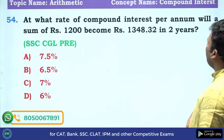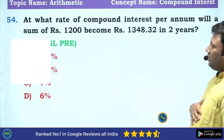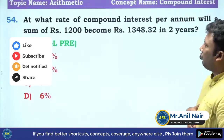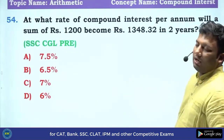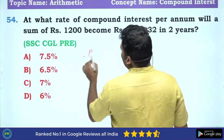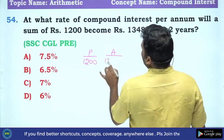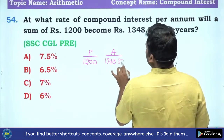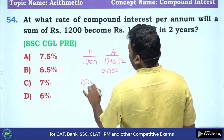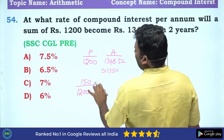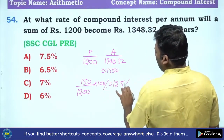At what rate of compound interest will a sum of 1200 become 1348.32 in 2 years? Principle is 1200, amount is 1348.32. I will approximate it to 1350. The extra amount is 150 on 1200, which gives about 12.5% total. So the answer should be closer to 12.5%.